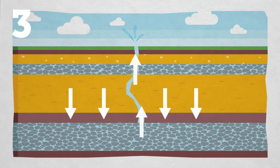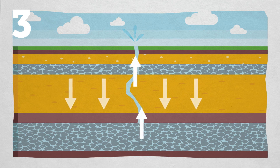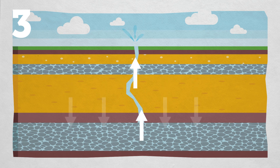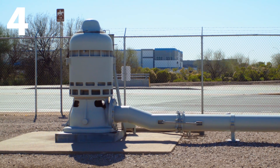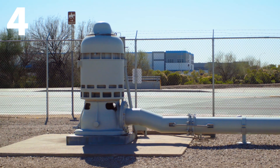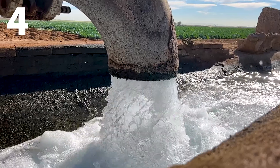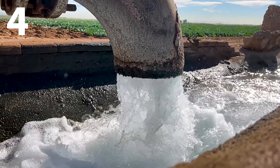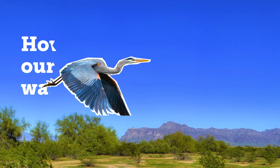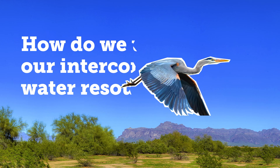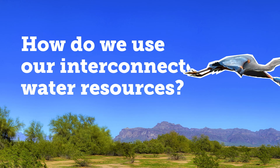There is another type of spring: artesian springs, where water rises from deep in the earth and is forced out by the tremendous pressure that a confined aquifer is under. Finally, as we already know, humans pump groundwater to the surface for use.